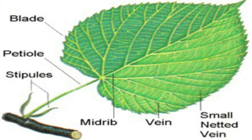At the middle part of the leaf blade is a midrib, with its branches called veins. The petiole is the leaf stalk that connects the leaf to the stem. Some plants have stipules — they look like two small leaflets at the base of the stalk.